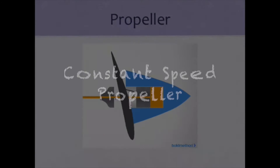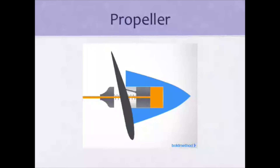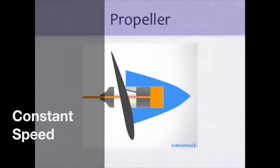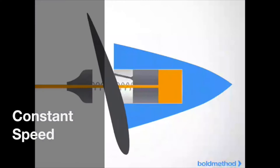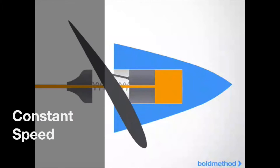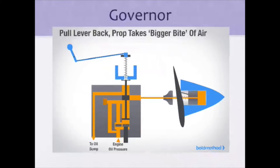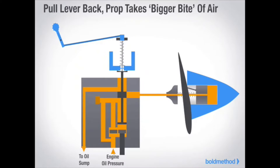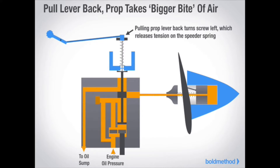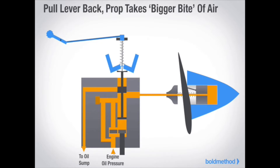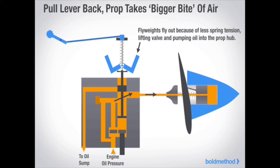The propeller converts rotational power from the engine into thrust. The rotational power is called torque. A constant speed propeller keeps the propeller pitch adjusted for maximum efficiency for most conditions of flight. The component in charge of it all is called the governor. The governor moves oil back and forth through the propeller hub to make sure the prop is at the pitch and speed that you want.